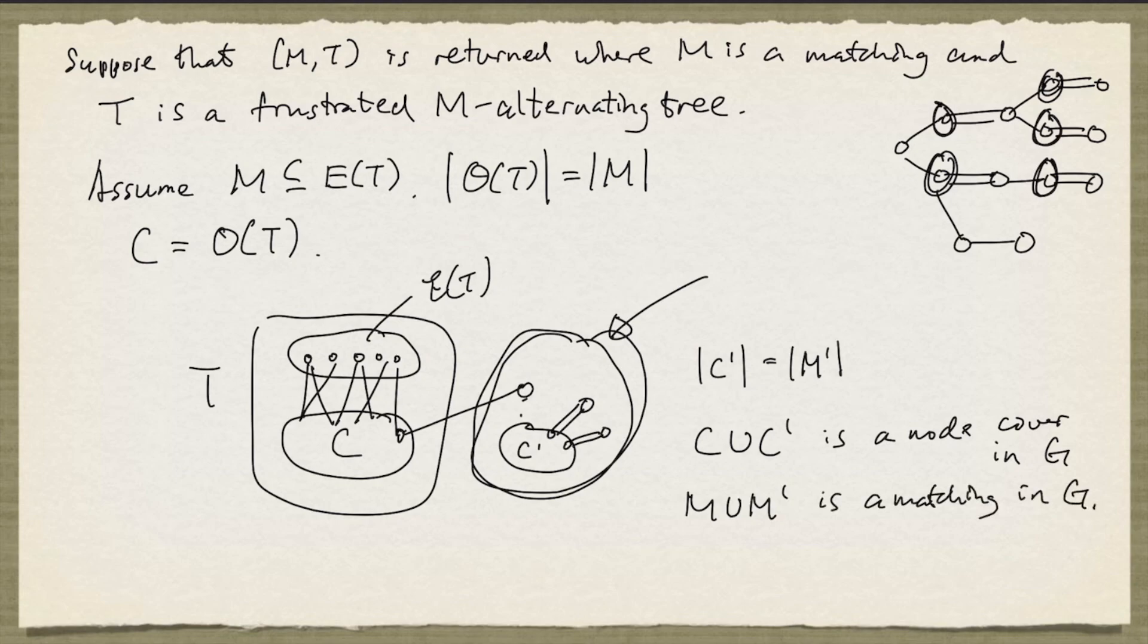But what do we know? We know that M union M' has cardinality given by the cardinality of M plus the cardinality of M', and this in turn is equal to the cardinality of C plus the cardinality of C'. And that's just the cardinality of C union C'. And that completes the induction.